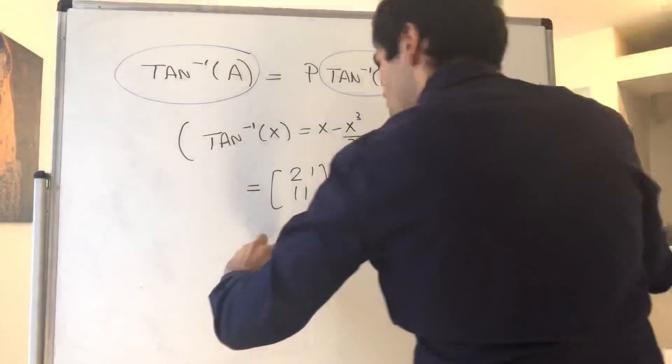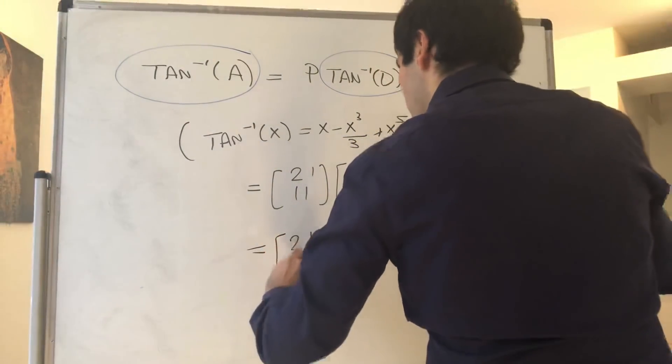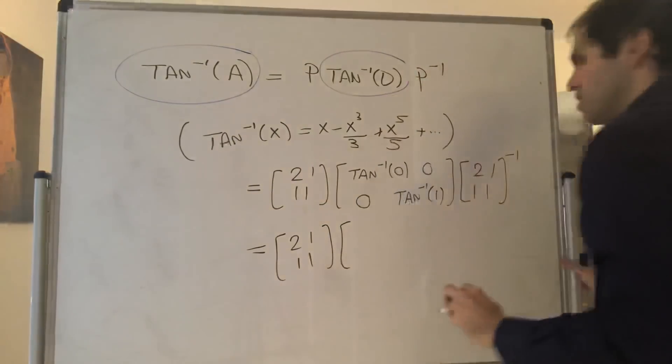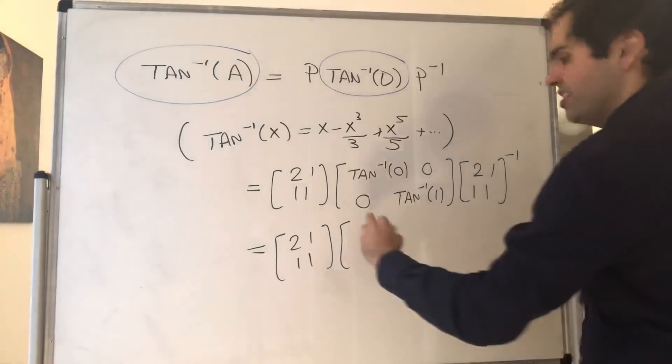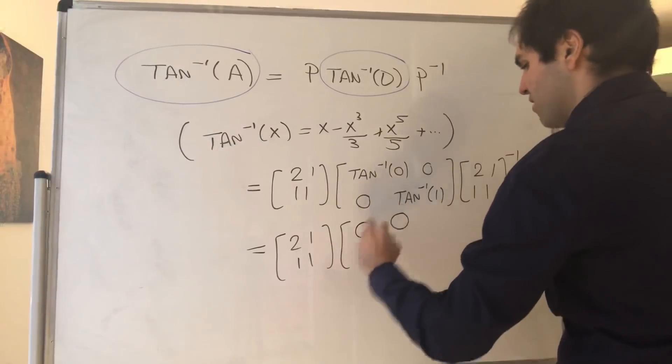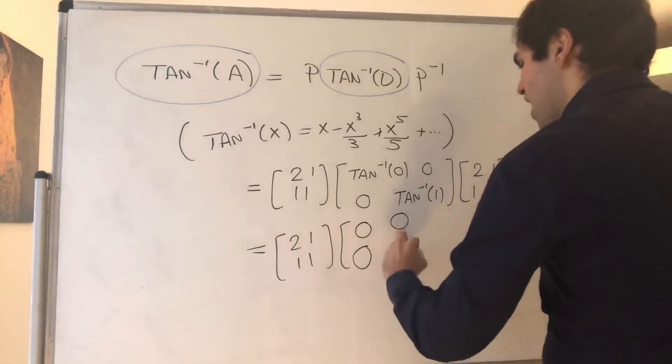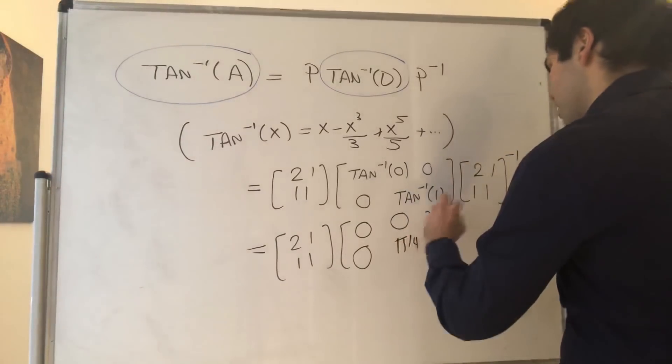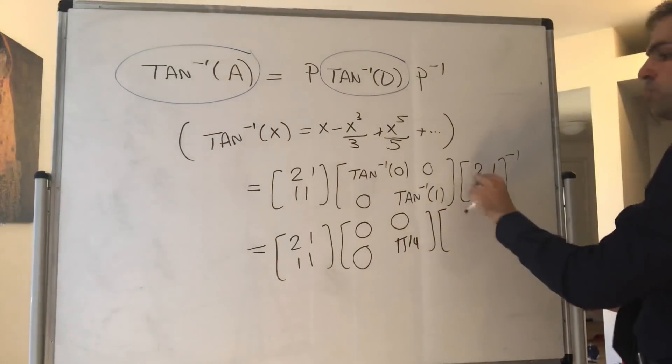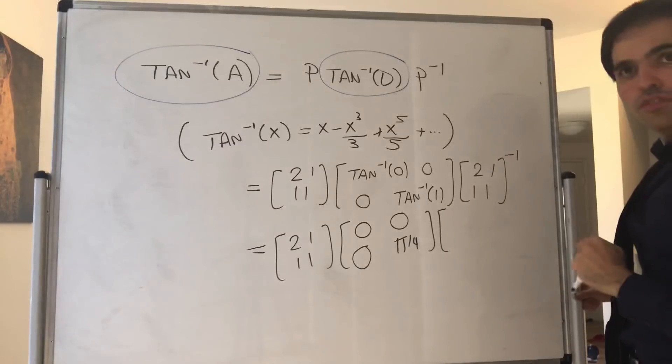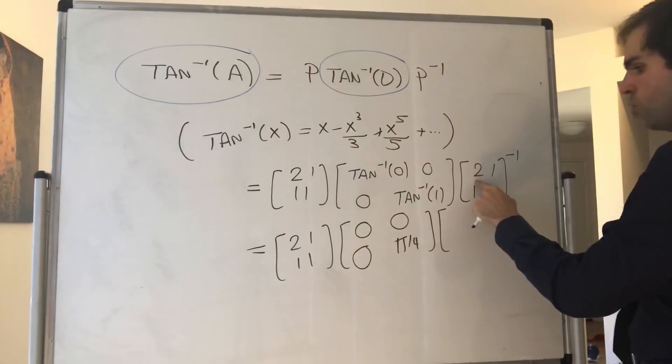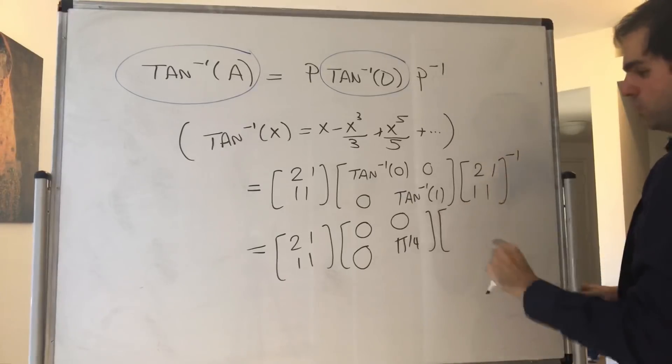And therefore, we get [2, 1; 1, 1]. So what's the angle whose tangent is 0? Well, 0. The easy angle whose tangent is 1 is pi over 4. And then for this matrix, use the formula for the inverse of a 2 by 2 matrix. So 1 over the determinant, so 2 times 1 minus 1, which is 1. And then you switch those two entries and you do minus 1 of the non-diagonal entries.